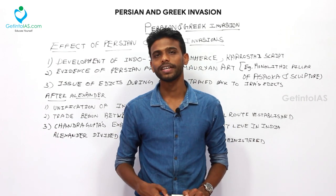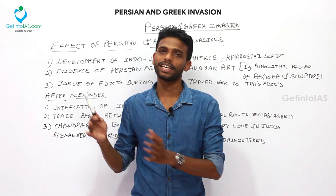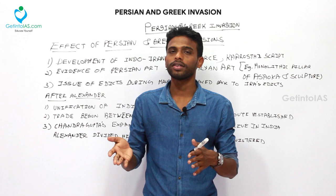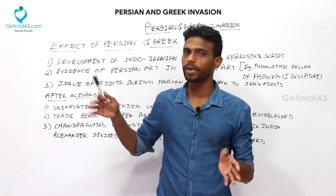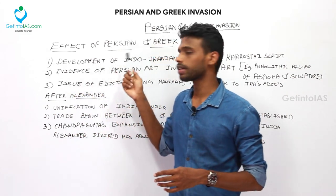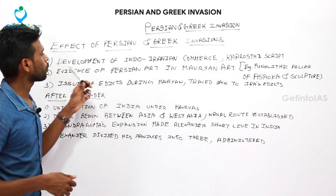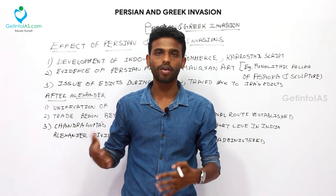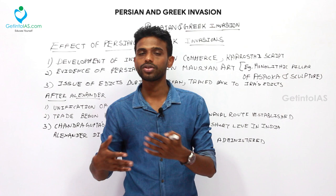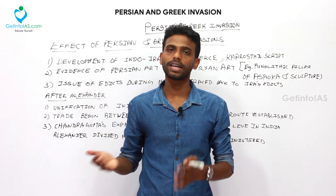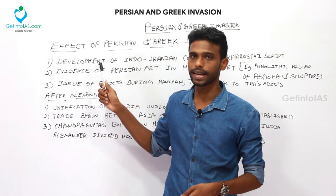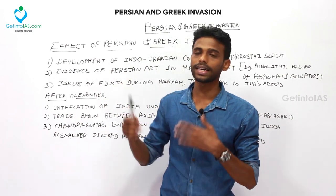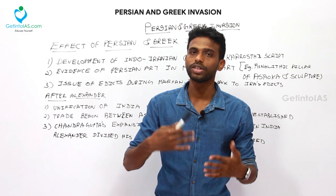Now we move to the effects of the Persian and Alexander invasions. The Persian invasion happened over a span of about 200 years. One major effect was the development of Indo-Iranian trade and cultural relations. After the invasion of the Persian Empire, trade started developing between India and Iran.